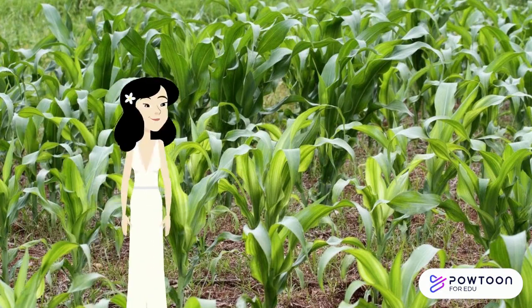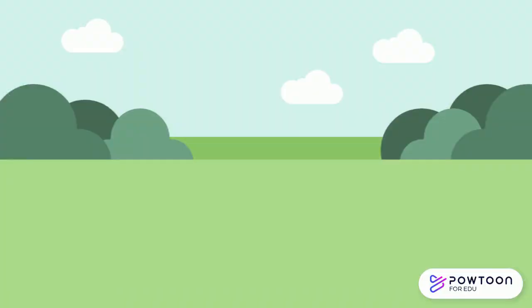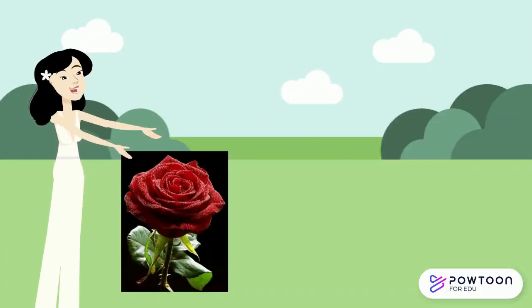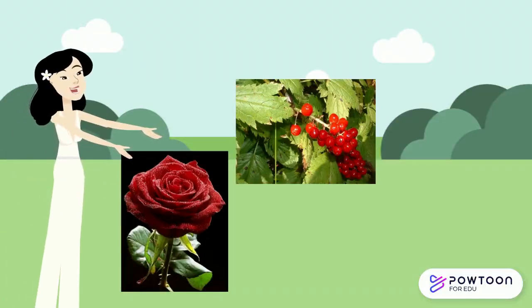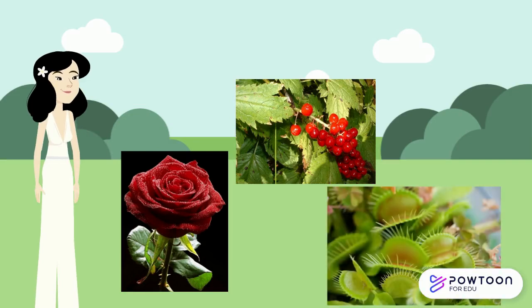What kind of external structures do plants use for survival? Some plants like roses use thorns to keep animals away from them. Other plants use bright colors on their fruits to confuse animals into thinking they might be poisonous. Some plants even eat bugs. Venus flytraps use their traps to lure insects in — once they land on the trap, there is no going back and the plant will start to digest the bug.